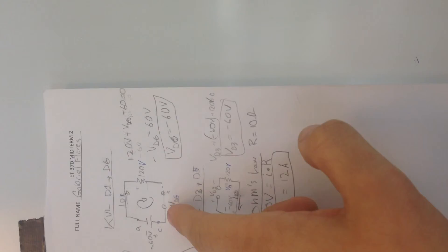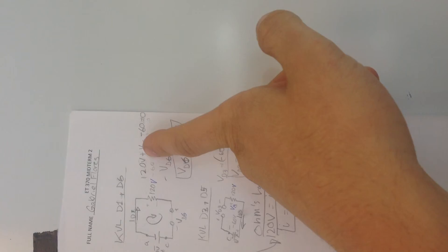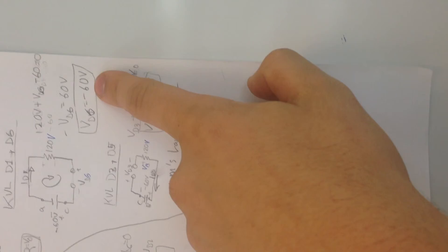Got 120 volts, minus 60, and then VD6. We don't know what that is. Now we do, because I just added those together. I got 60 plus VD6, and then I moved it over. Algebra worked out. I got 60 volts.